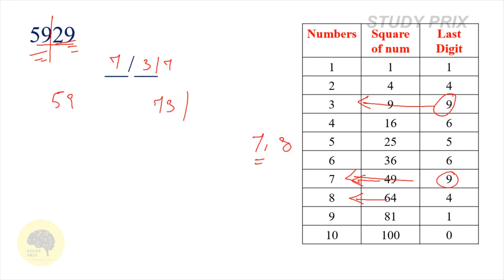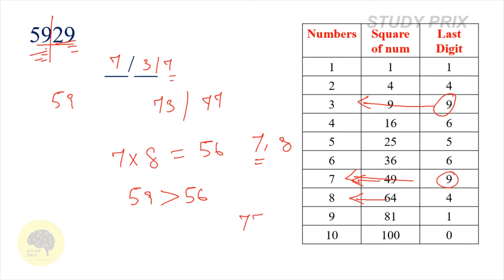The candidates are 73 or 77. Take the first digit 7 and multiply with the next number 8, giving 56. The first two digits, 59, are greater than 56. In this condition we take the maximum last digit, which is 7. Therefore the square root of 5929 is 77.